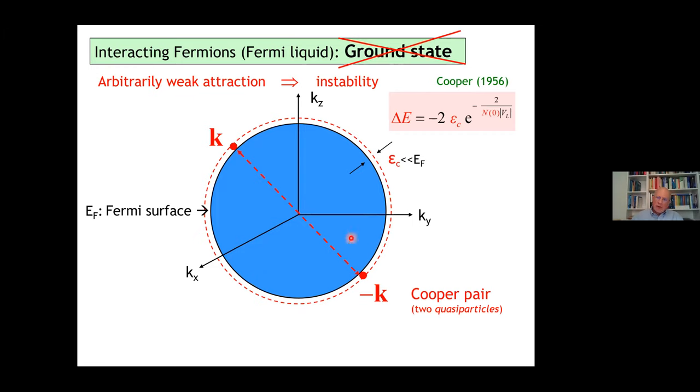A Cooper pair with k and minus k is two quasi-particles. The energy is lowered by a non-perturbatively small contribution, where epsilon_c is the width in energy around the Fermi surface where the attraction occurs. And this is a universal property of Fermi systems. Every Fermi system is sort of unstable towards that.